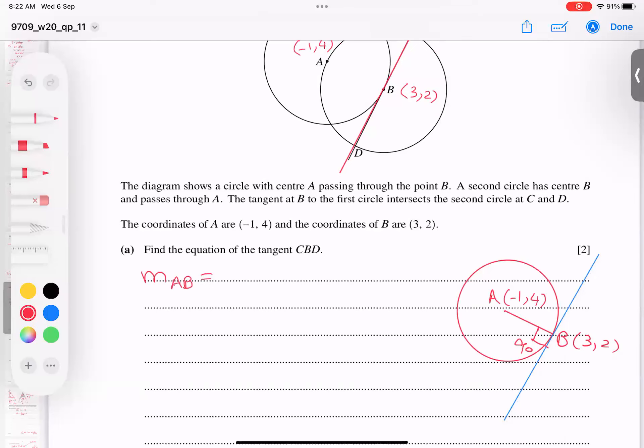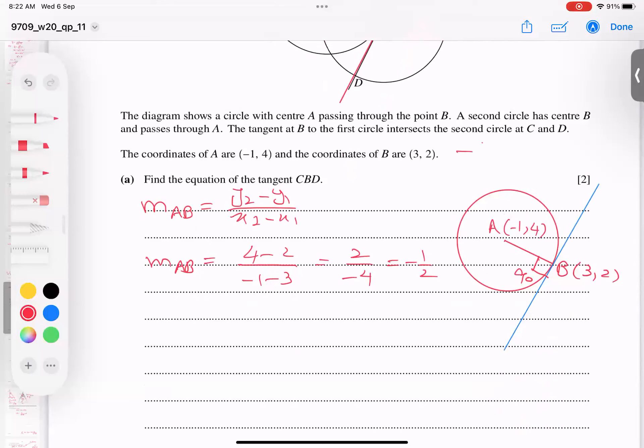So what is the way? First of all, gradient of AB line we can find. This line gradient. And what is the formula? Y2 minus Y1 over X2 minus X1. And I'm going to find. So let's say 4 minus 2 comes up, 4 minus 2. And minus 1, minus 3 goes down. And I get 2 over negative 4. So negative half is a gradient of AB line. I mean to say radius gradient is this. Then what is a tangent gradient? Negative reciprocal.